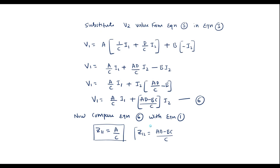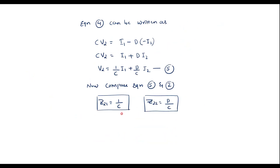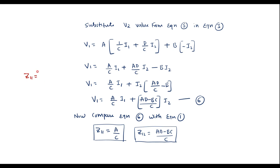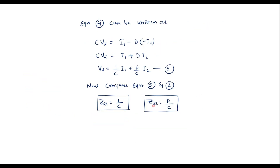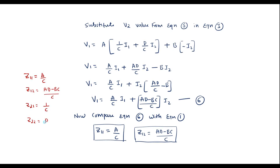Thus we have expressed all Z parameters in terms of A, B, C, D parameters: Z11 = A/C, Z12 = (AD − BC)/C, Z21 = 1/C, and Z22 = D/C. We have successfully expressed Z parameters in terms of transmission or ABCD parameters.